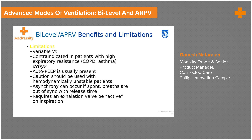Unlike conventional pressure control ventilation — where a certain inspiratory pressure produces a predictable volume based on lung compliance — in bi-level the patient can load and unload during the inspiratory cycle, resulting in a variable tidal volume. Patients with high expiratory resistance, specifically COPD patients, are actually contraindicated for bi-level, because auto-PEEP is already present in such patients and allowing breathing throughout all parts of the cycle may promote auto-PEEP further. Hemodynamically unstable patients also require caution when using this mode.